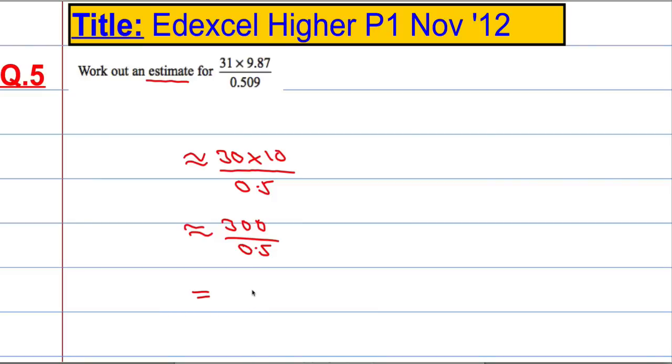which will, not timesing by 10, timesing by 2, should I say. 300 times 2 gives us 600. So, dividing by a half is the same as timesing by 2.